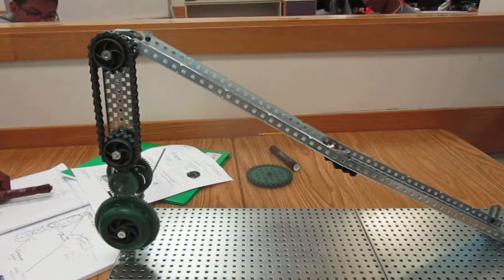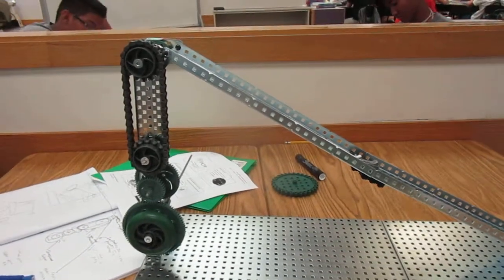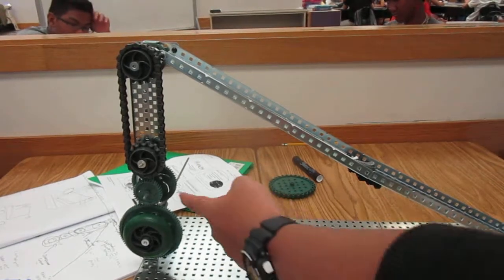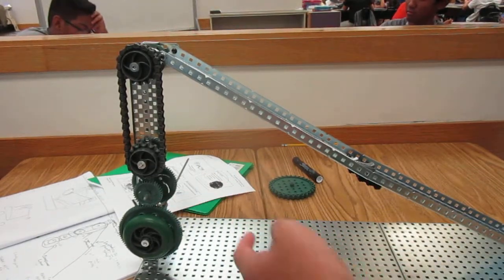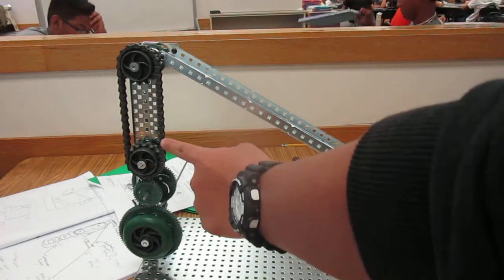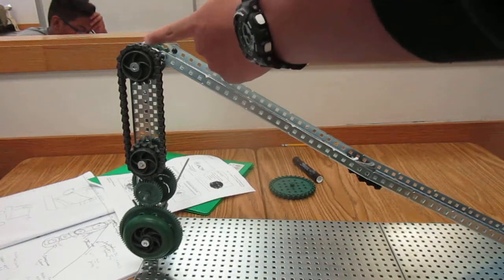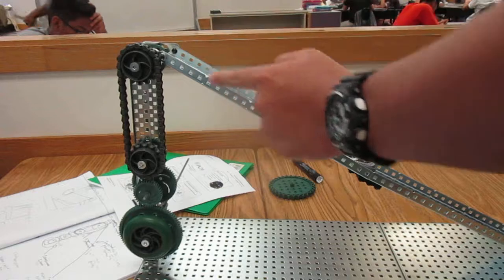The four simple machines that we used were a compound gear system, which is this, a chain-and-sprocket system, which is this, a one-chain pulley, which is this part right here, and an incline plane.